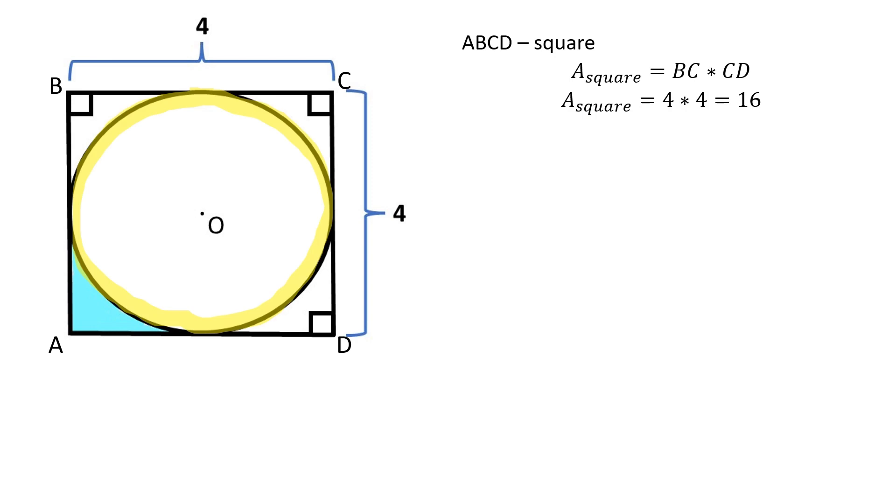To find the area of the given circle, we need to find the length of the radius. The radius of a circle inscribed in a square is equal to half of the side of the square. The radius is equal to 2. There are several ways to prove this formula. I will show you one of them.